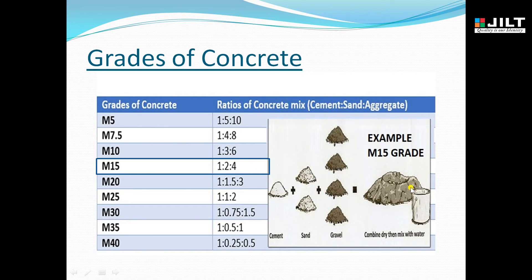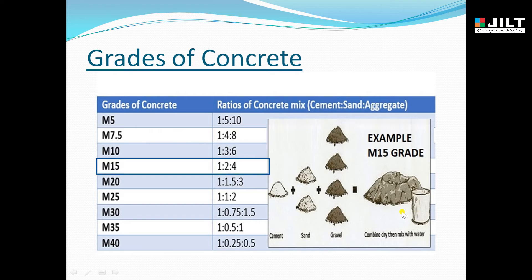I have taken one example to explain clearly. I have taken the M15 grade and plotted an image. The ratio of M15 is 1:2:4, where 1 indicates cement, 2 indicates sand, and 4 indicates gravel (coarse aggregate), added with water. This is the example of the M15 grade mix proportion.